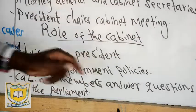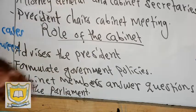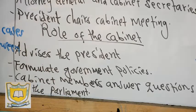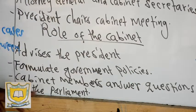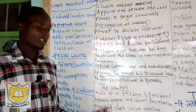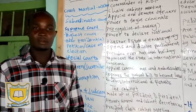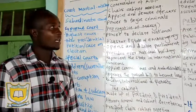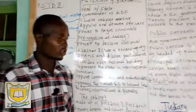Then they formulate government policy. They engage in formulation of government policy — when we talk about formulation we are talking about coming up with ideas on how to make the government run well. Policy refers to government plans. Then cabinet members answer questions in the parliament. The CS may be called to parliament to answer some questions according to their ministry — if it's not working well or something has happened. They may answer questions concerning their ministries and departments.